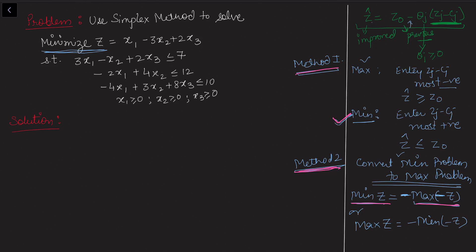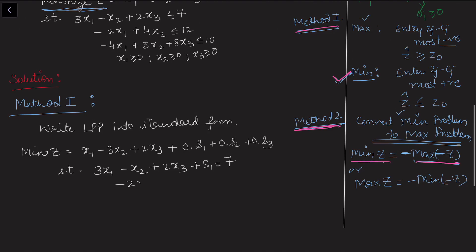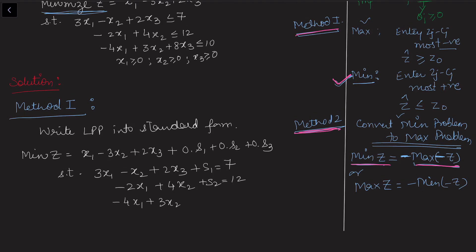Now we solve the problem with both methods. In Method 1 we use the minimization entering rule; in Method 2 we convert the minimization function into maximization. Writing the LPP in standard form by adding slack variables: minimize z = x1 minus 3*x2 plus 2*x3 plus 0*s1 plus 0*s2 plus 0*s3, subject to 3*x1 minus x2 plus 2*x3 plus s1 = 7, 4*x2 plus s2 = 12, and minus 4*x1 plus 3*x2 plus 8*x3 plus s3 = 10.